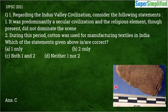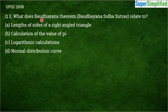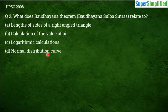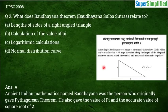Question number 2: What does the Bodhayana theorem or Bodhayana Sulba Sutra relate to? Options are: lengths of sides of a right angle triangle, calculation of the value of pi, logarithmic calculations, or normal distribution curve. The correct answer is A — lengths of the sides of a right angle triangle, basically the Pythagorean theorem.